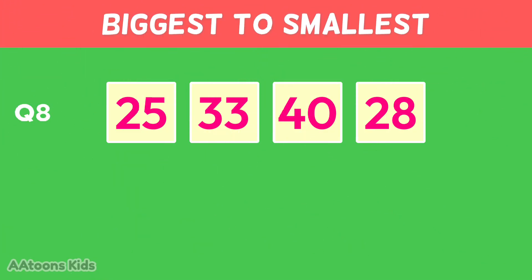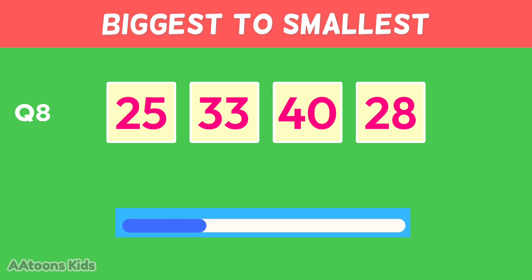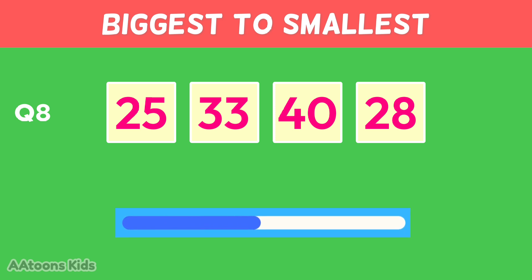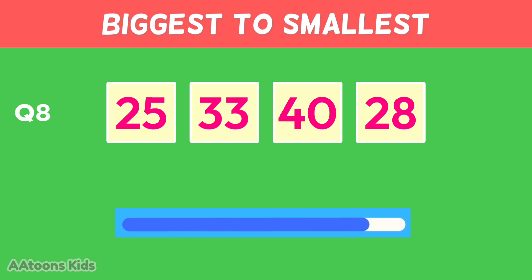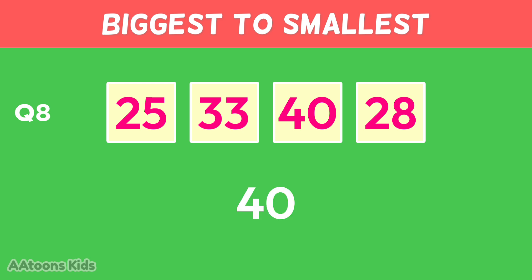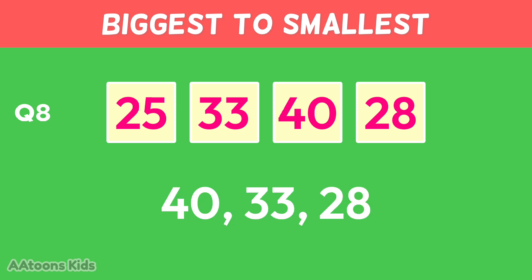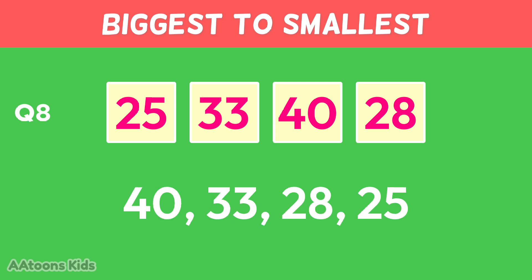Arrange these numbers from biggest to smallest: forty, thirty-three, twenty-eight, twenty-five.